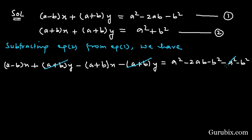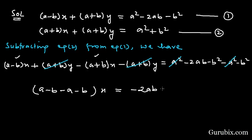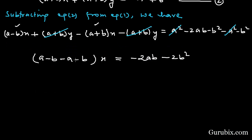We cancel out the y terms, and take x common from the remaining terms. We have x times [(a minus b) minus (a plus b)] equals minus 2ab minus 2b squared. We observe that we can simplify this to minus 2b times x equals minus 2b times (a plus b).